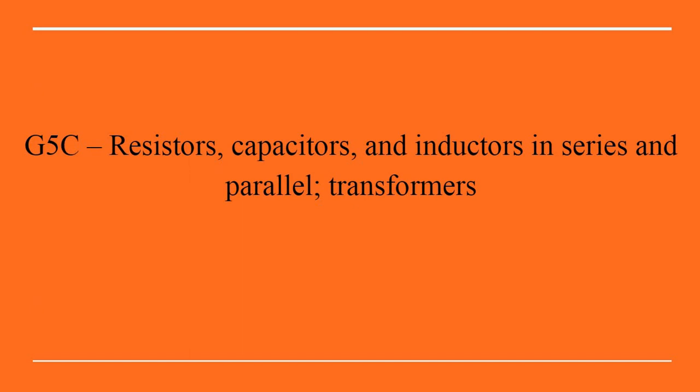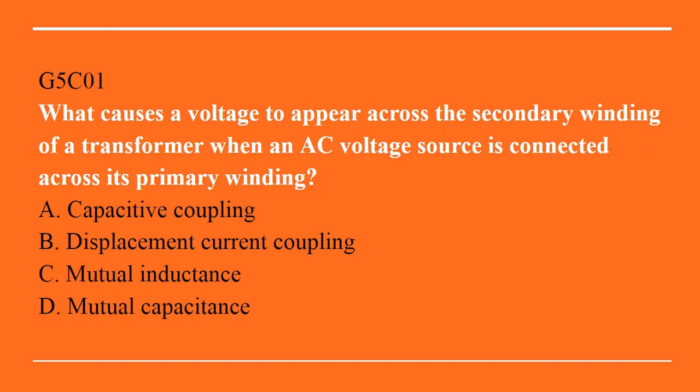Next up, G5C, covering resistors, capacitors, and inductors in series and parallel, as well as transformers. G5C01: what causes a voltage to appear across the secondary winding of a transformer when an AC voltage source is connected across its primary winding? A. Capacitive coupling. B. Displacement current coupling. C. Mutual inductance. Or D. Mutual capacitance. Answer is C: mutual inductance.